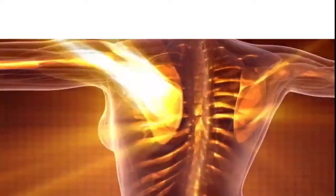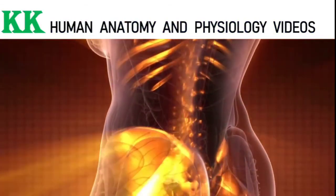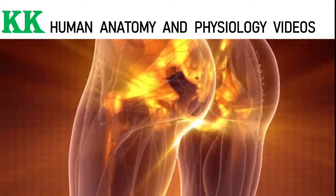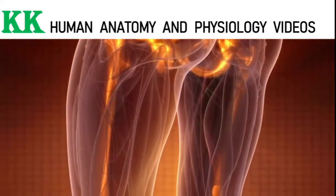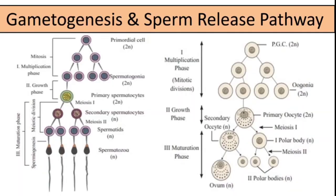Hello everyone, welcome to KK Human Anatomy and Physiology videos, a platform where you will get interesting and informative facts about human anatomy and physiology. In this video, we are going to discuss about gametogenesis, that is the production of sperms and ova, and the pathway of semen, that is sperm release pathway.